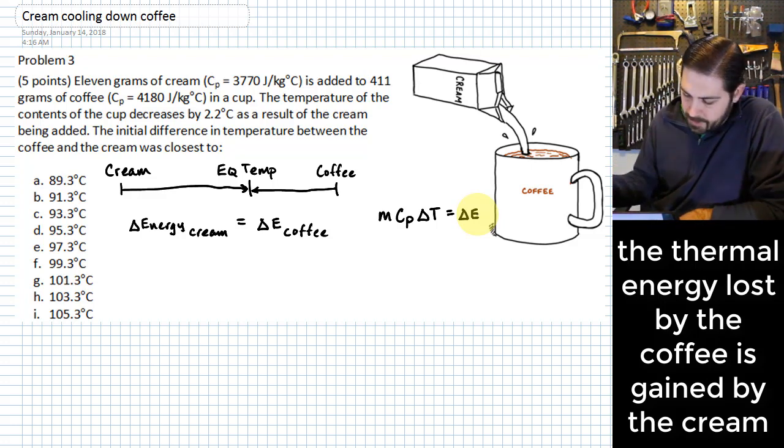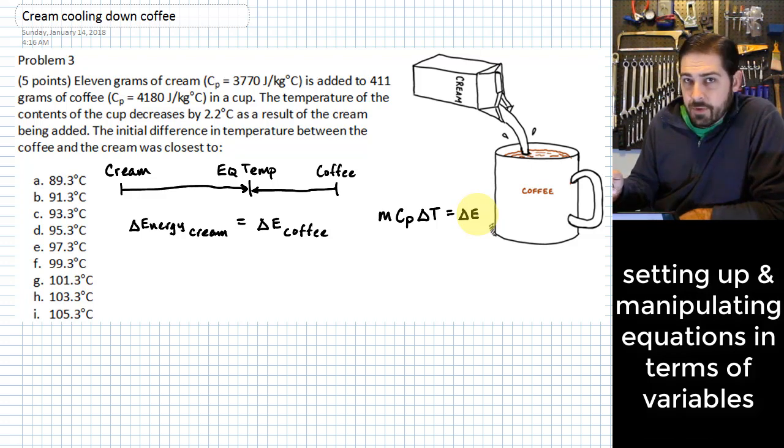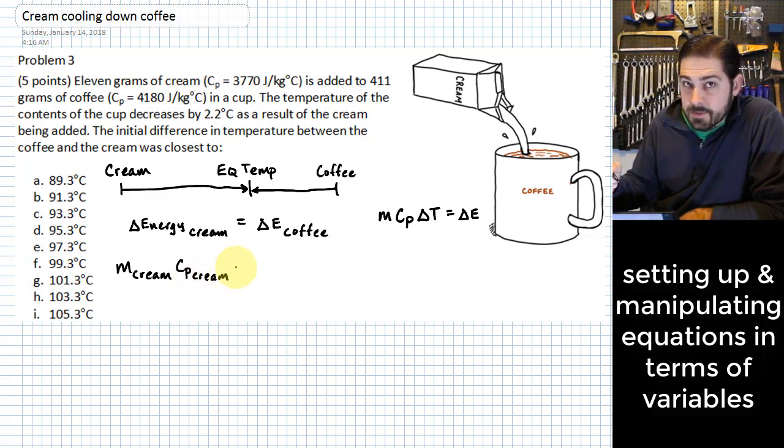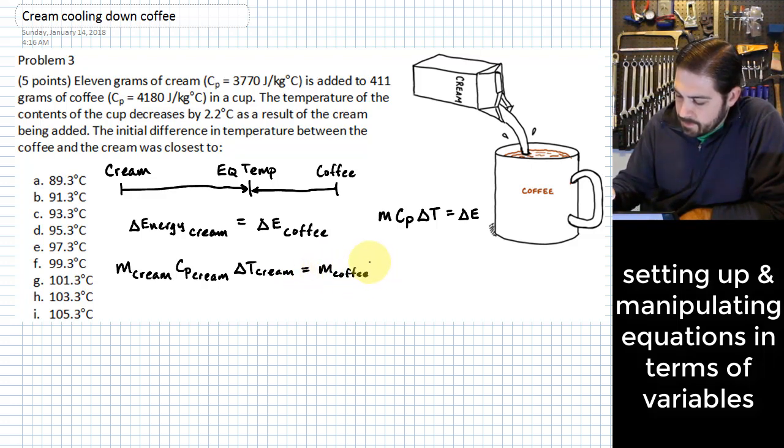Actually, what I'm going to do here is instead of plugging numbers in, I'm going to just work with variables for a minute. So the mass of the cream times the specific heat of the cream times the change in the temperature of the cream is equal to the mass of the coffee times the specific heat of the coffee times the change in the temperature of the coffee.